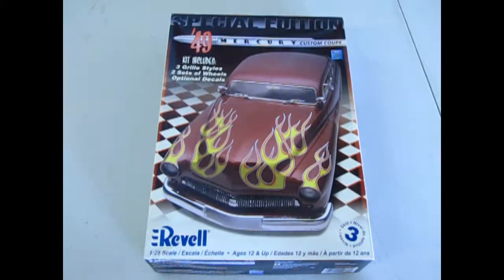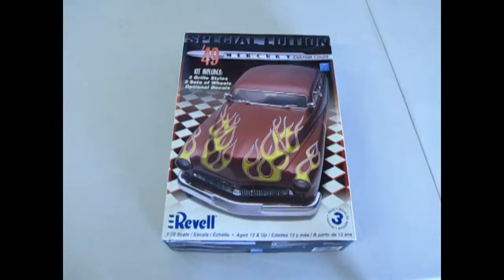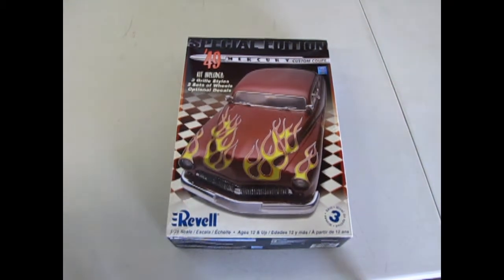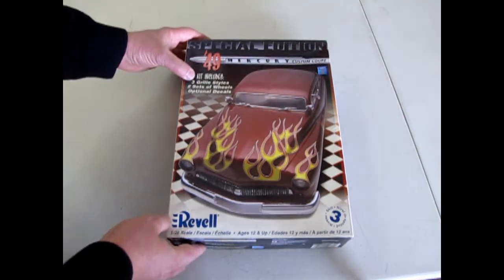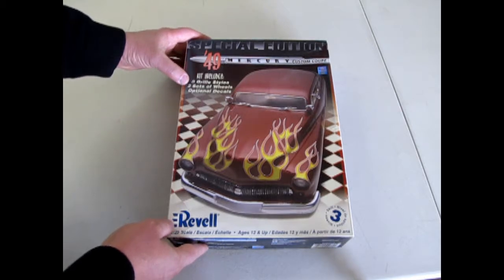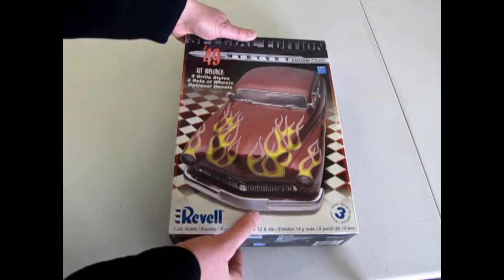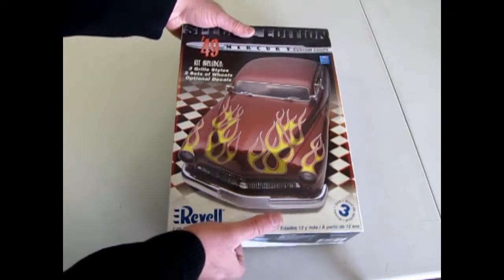Cool customs of a bygone era coming up here, as we look at Revell Monogram's 1949 Custom Mercury Kit. This one is pretty cool because they give you three grille styles, two sets of wheels, and optional decals. It's a skill level 3 kit, so definitely for the more advanced model builder.